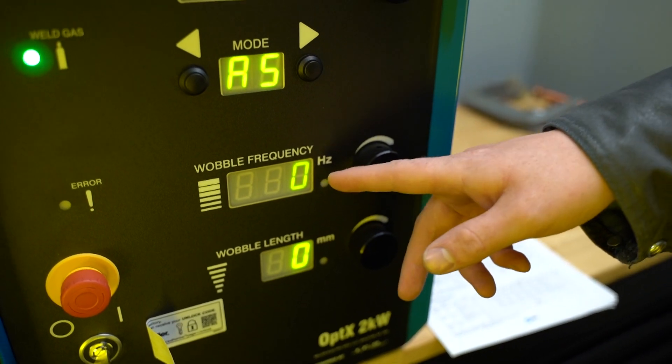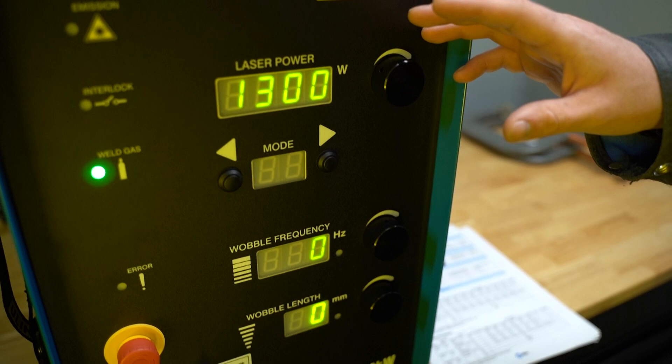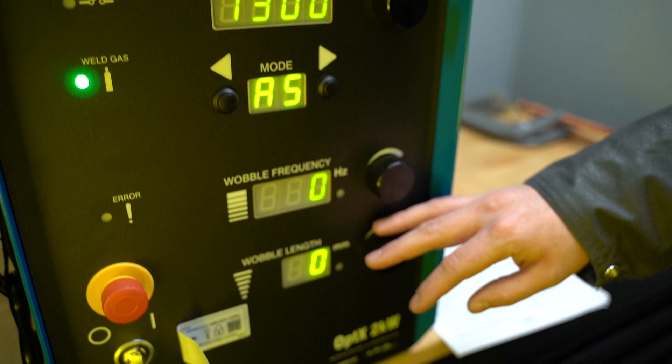Frequency is more of a fine-tuned adjustment, especially at high travel speeds. The main ones you're going to play with to dial in your parameter sets first is going to be power and your weld width—your wobble length.